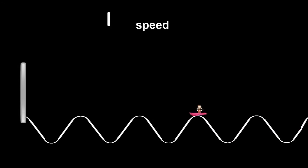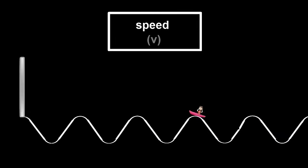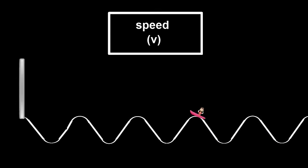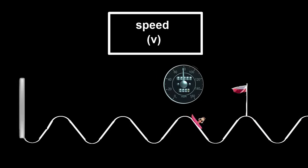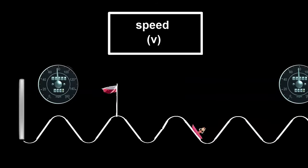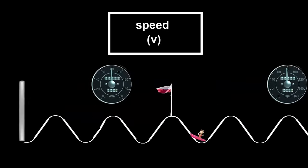The speed of a wave is how fast it's traveling from left to right here, and is usually given the symbol V, which stands for velocity. Velocity is another word for speed. Notice how the speed of the wave is constant, and each crest moves at the same speed as the others.